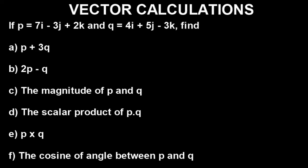Before we bring the Casio calculator to solve these problems, let's quickly look at the questions and see what we are asked to find. The question says: if vector P and vector Q have given values, find: (a) vector P plus 3 times vector Q, (b) vector 2P minus vector Q, (c) the magnitude of vector P and Q, (d) the scalar product of vector P and Q, (e) the multiplication of vector P and Q, and (f) the cosine of the angle between vector P and vector Q. These are very simple with the calculator.